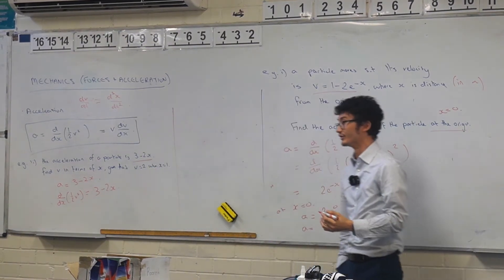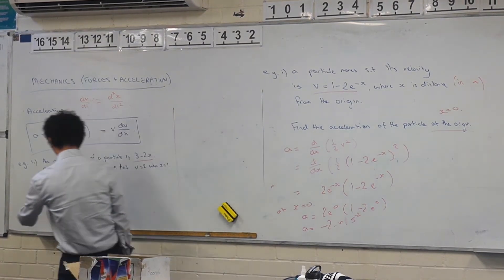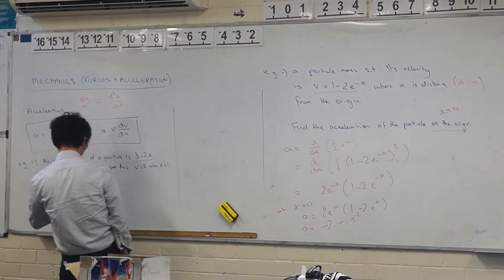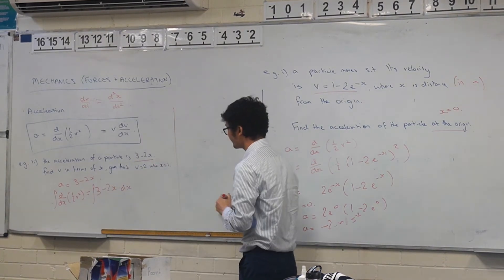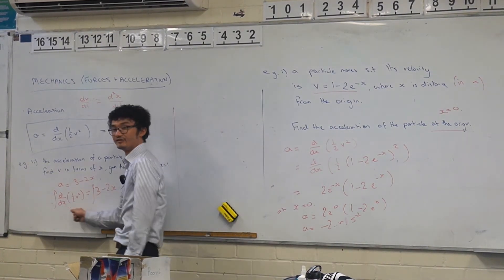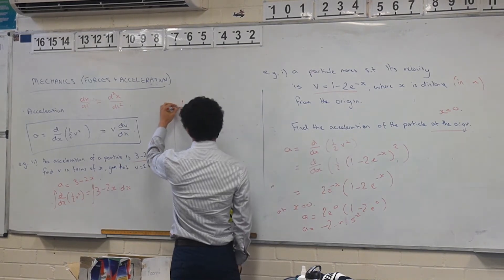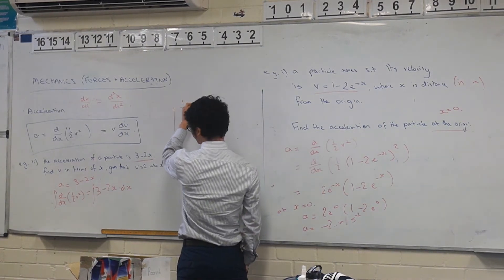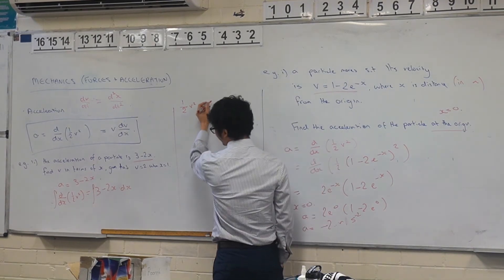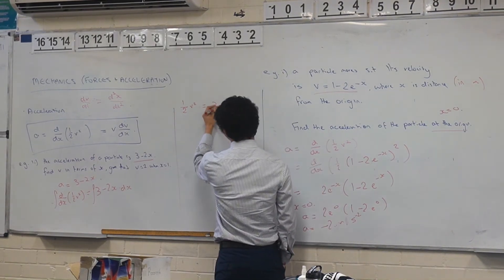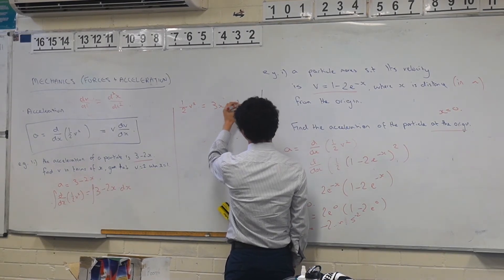We integrate both sides with respect to x. That's why this form is beneficial — we just get ½v² on the left side. And then integrating the right-hand side gives us 3x minus x squared plus c.